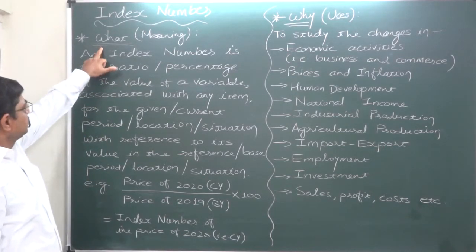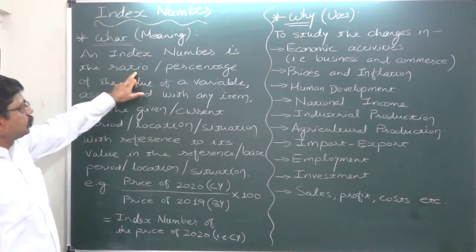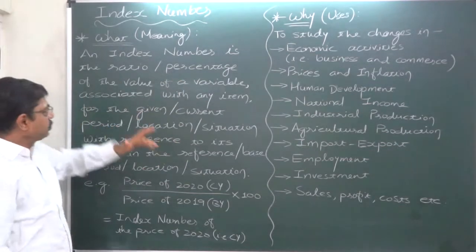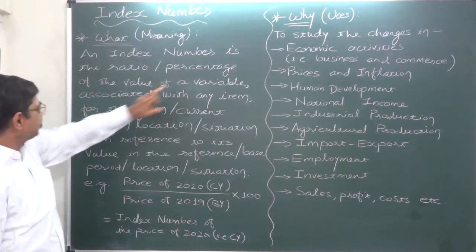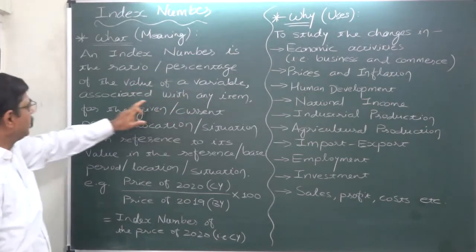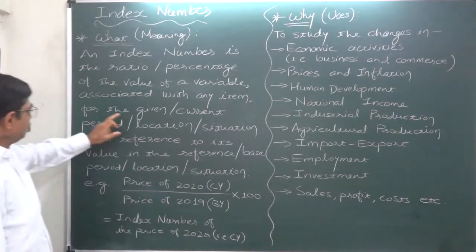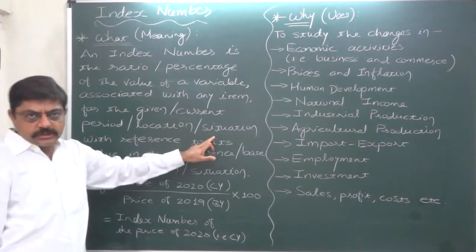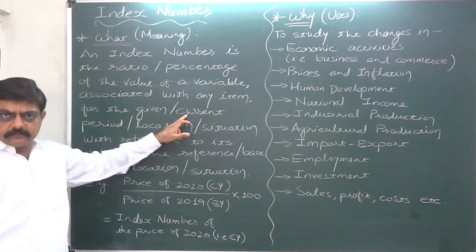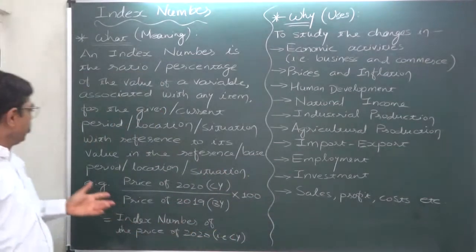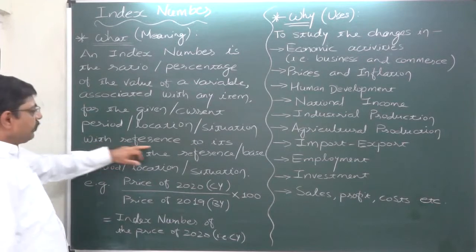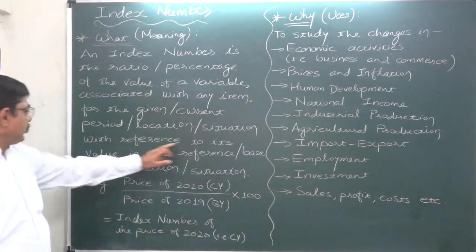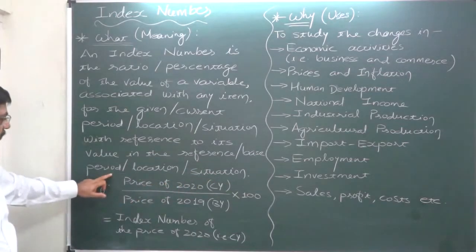Let's take the formal meaning of index number. An index number is a ratio or percentage — percentage being the most popular form of expression — of the value of a variable associated with any item for the given or current period, or location, or situation. The percentage or ratio is calculated with reference to its value in the reference or base period, or location, or situation.